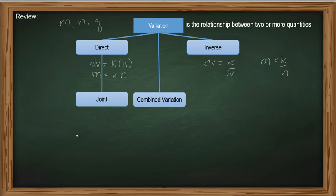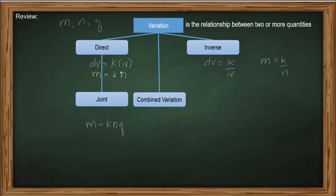How about joint variation? Joint variation is just like direct variation, but the only difference is that in joint variation, it involves two or more independent variables. For example, M varies jointly as N and Q — we have two independent variables, N and Q — whereas in direct variation, we only have one independent variable.